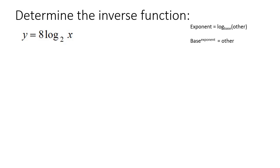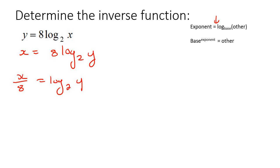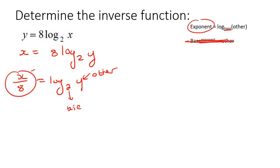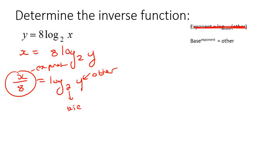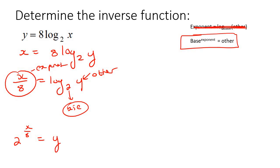Here's our next example. First, switch x and y around - that's always step one with inverse. Now we need to get rid of this 8, because you don't want anything in front of the log. So you're going to divide by 8. Now go label everything: the part next to the log is your base, this part here is the other, and this part is the exponent. Scratch this one out and rewrite it as an exponential: the base goes first, which is 2, then the exponent which is x over 8, then the other which is y. And there you've got y by itself.